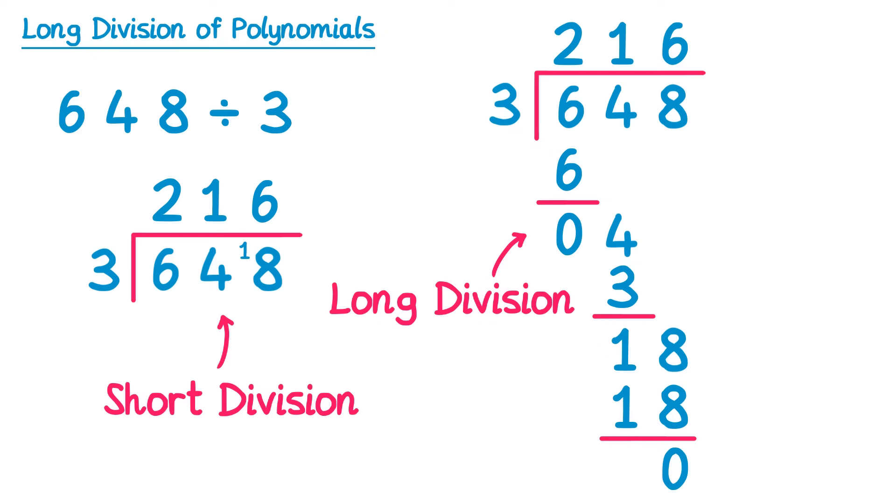Both methods here essentially do the same thing. The one on the left is usually a bit quicker because you do a lot of the maths in your head, whereas on the right one you're writing a lot more down.